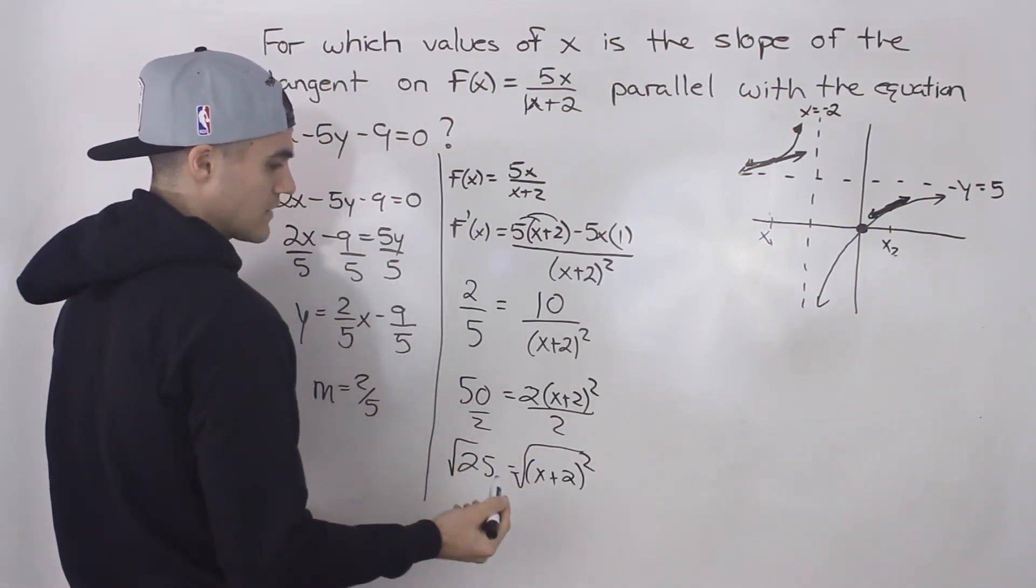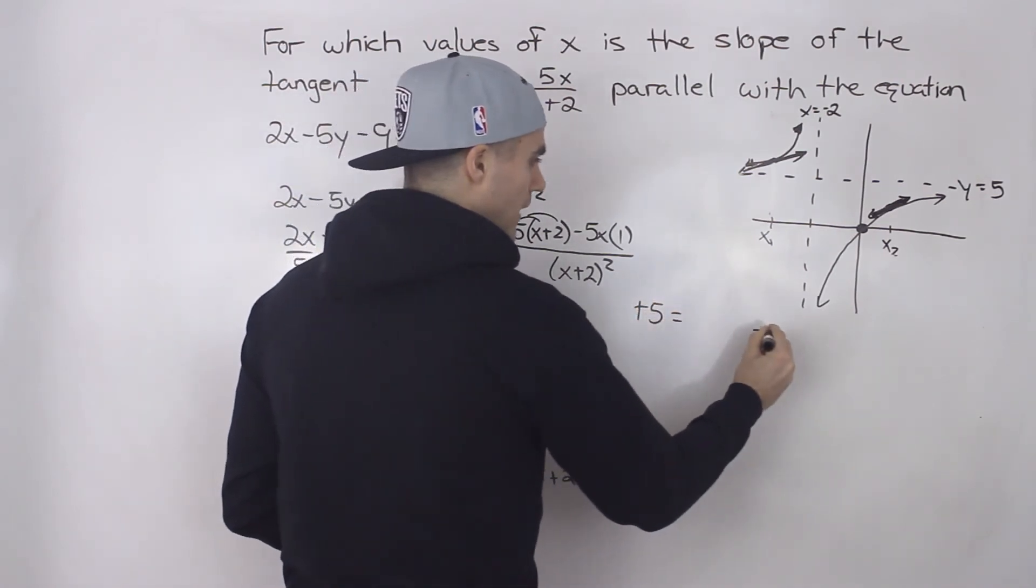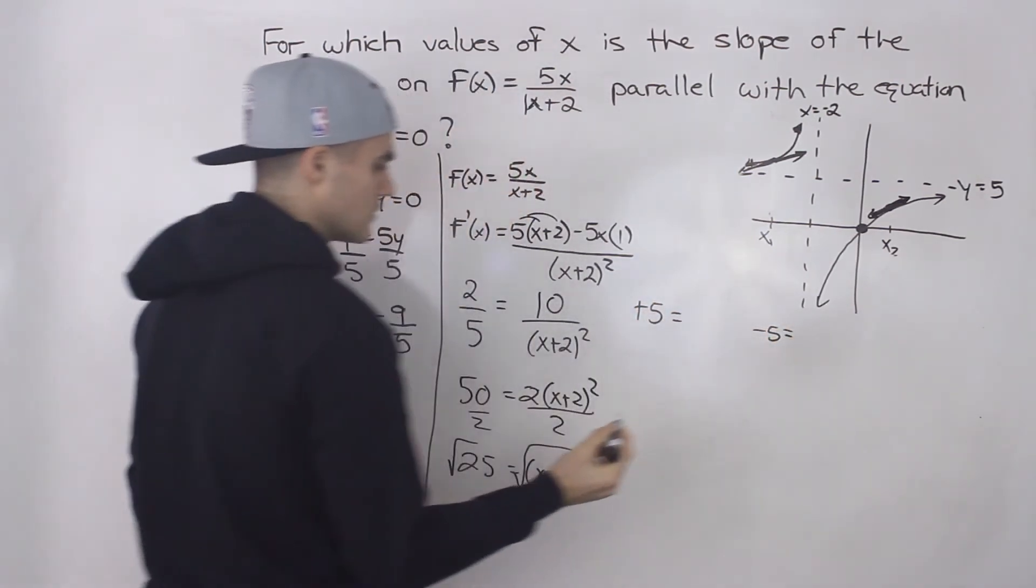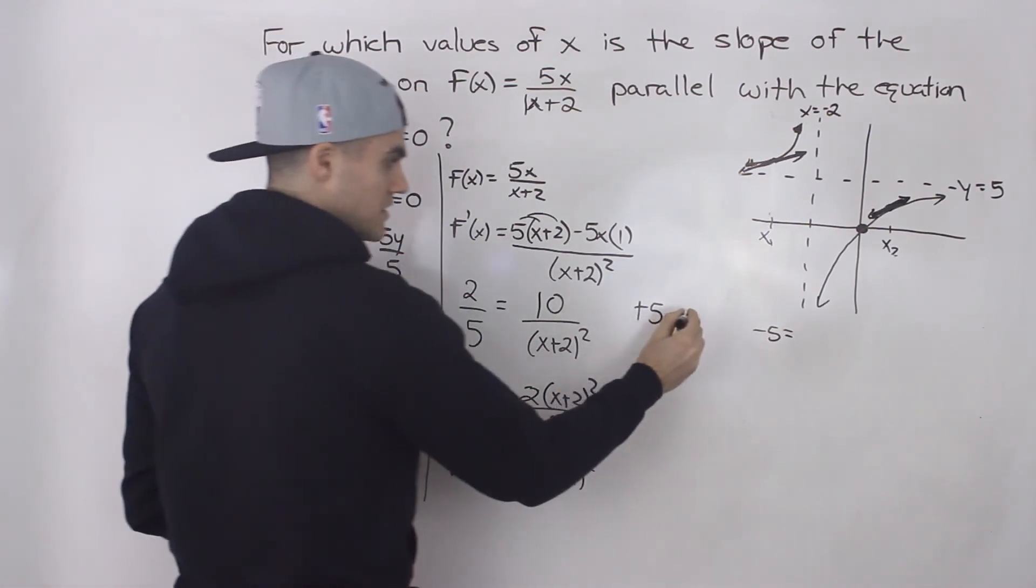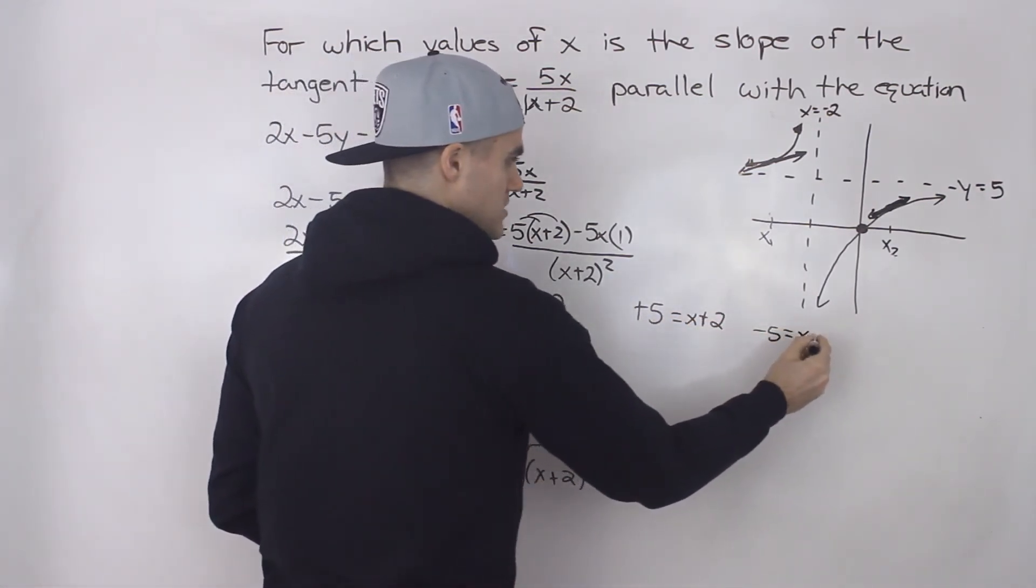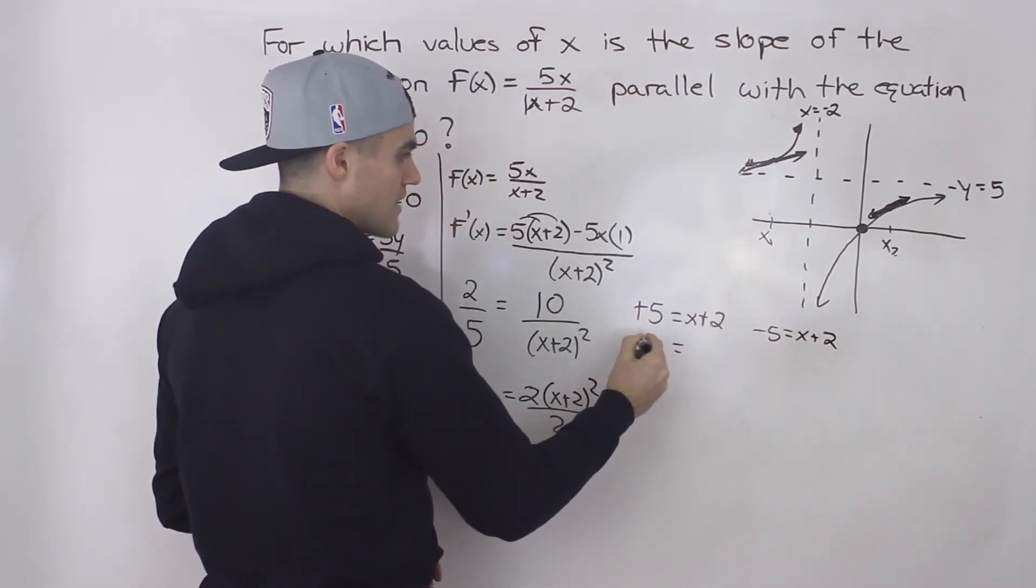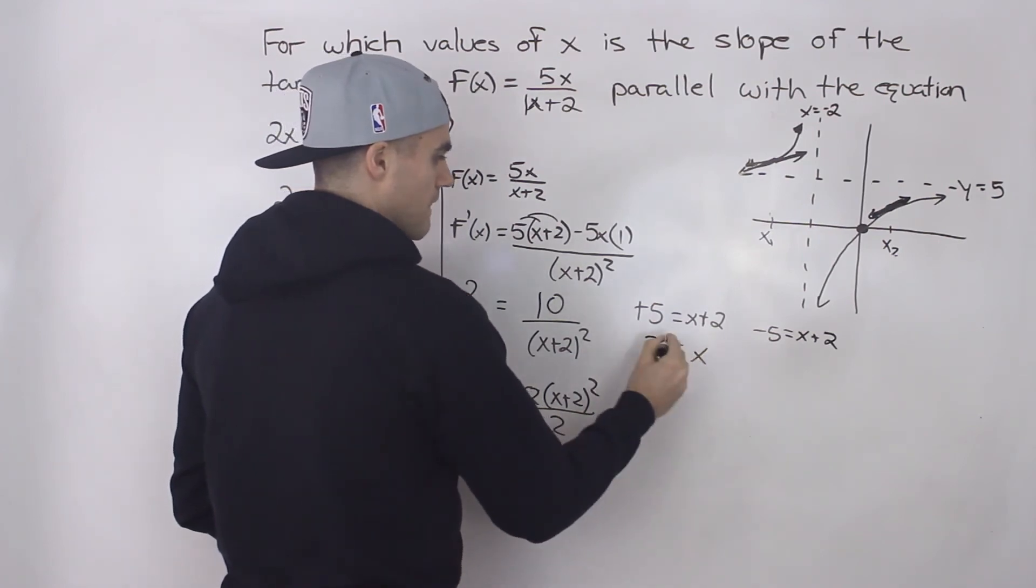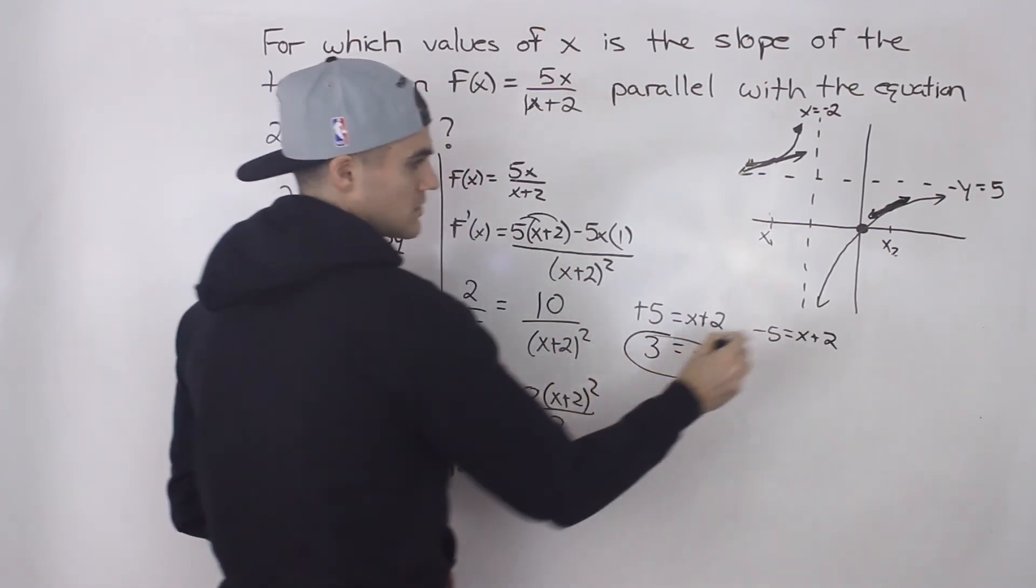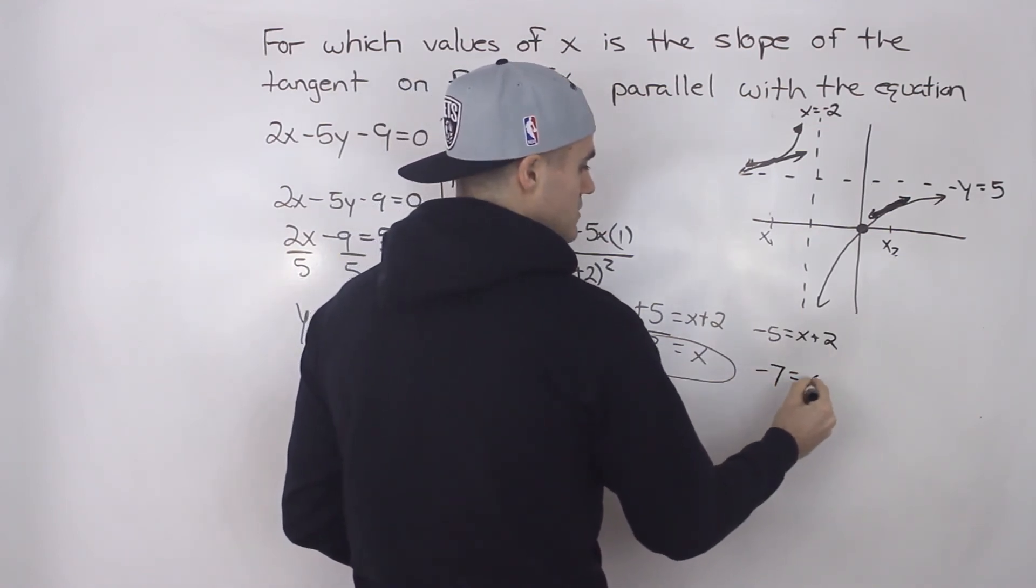And the square root of 25 can be either plus 5 or minus 5. So 2 different cases. So plus 5 equals x plus 2, or minus 5 equals x plus 2. Then when we solve for those x values, so bring the 2 over, so 5 minus 2 is 3. That is one solution. Bring the 2 over here. Negative 5 minus 2 gives us negative 7.